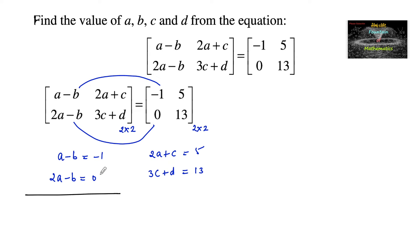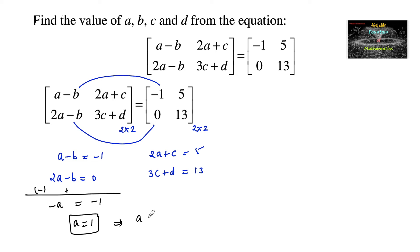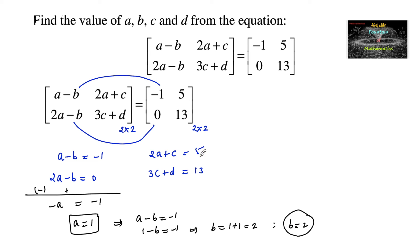By solving the first two equations, subtracting them: a minus 2a is negative a, and negative b plus b is 0, which equals negative 1 minus 0, that is negative 1. So a is equal to 1. Substituting a equals 1 into the first equation: a minus b equals negative 1, so 1 minus b equals negative 1, giving b equals 2.